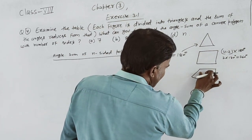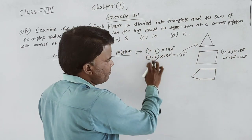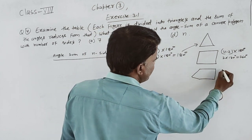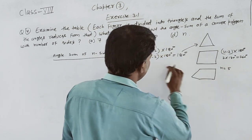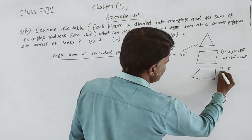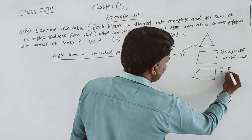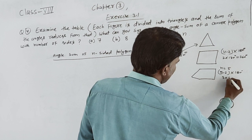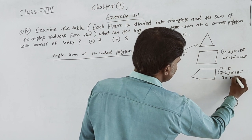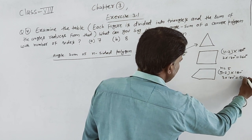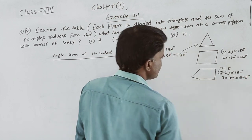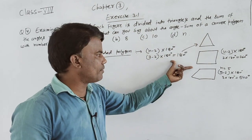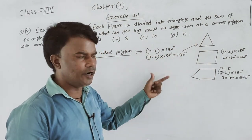अब pentagon की बात करें, तो pentagon में हमारे पास number of sides 1, 2, 3, 4, 5 — N की value 5 हो जाएगी। Formula के अंदर put करेंगे: 5 minus 2, multiply 180 — 3 multiply 180 — it means 540 degrees।